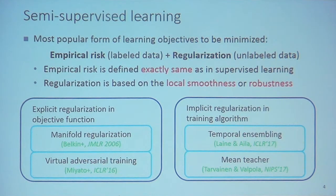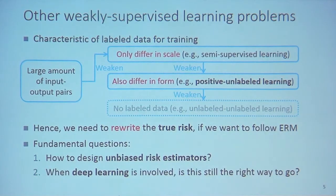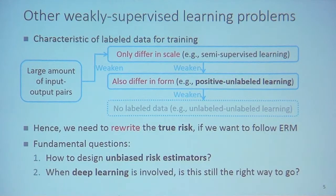We consider other weakly supervised learning problem settings where we don't have a small set of fully labeled data for training. Here we examine the characteristics of labeled data. In supervised learning, we have a large amount of input-output pairs. If we reduce the number of training data, as in semi-supervised learning, the labeled data only differ in scale from supervised learning.